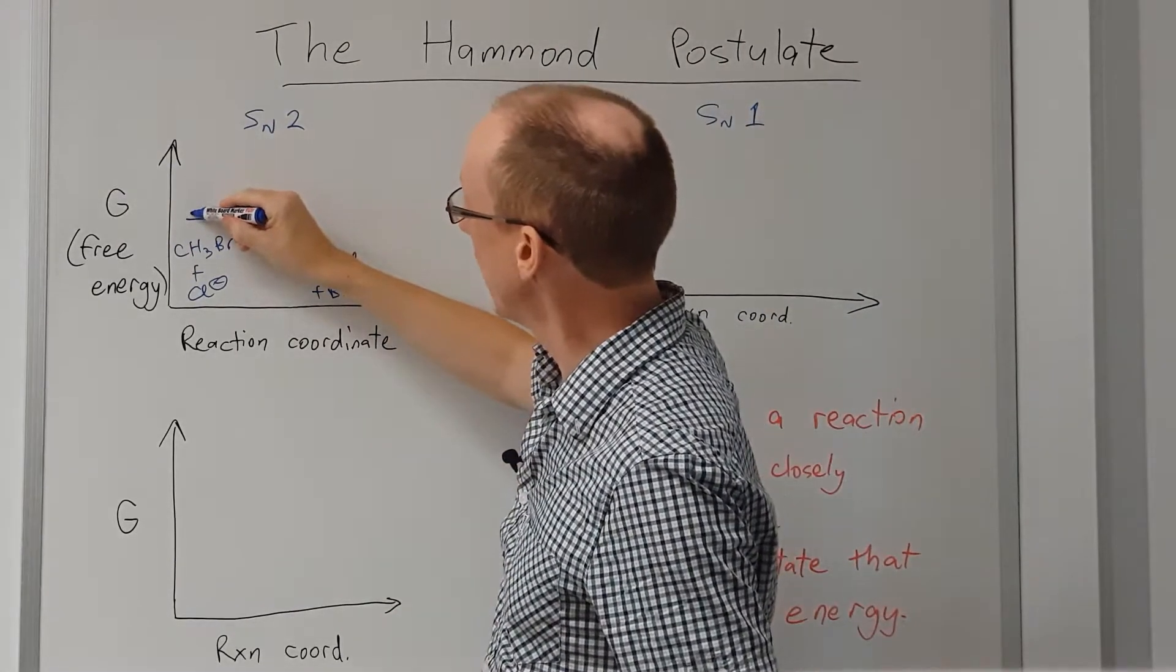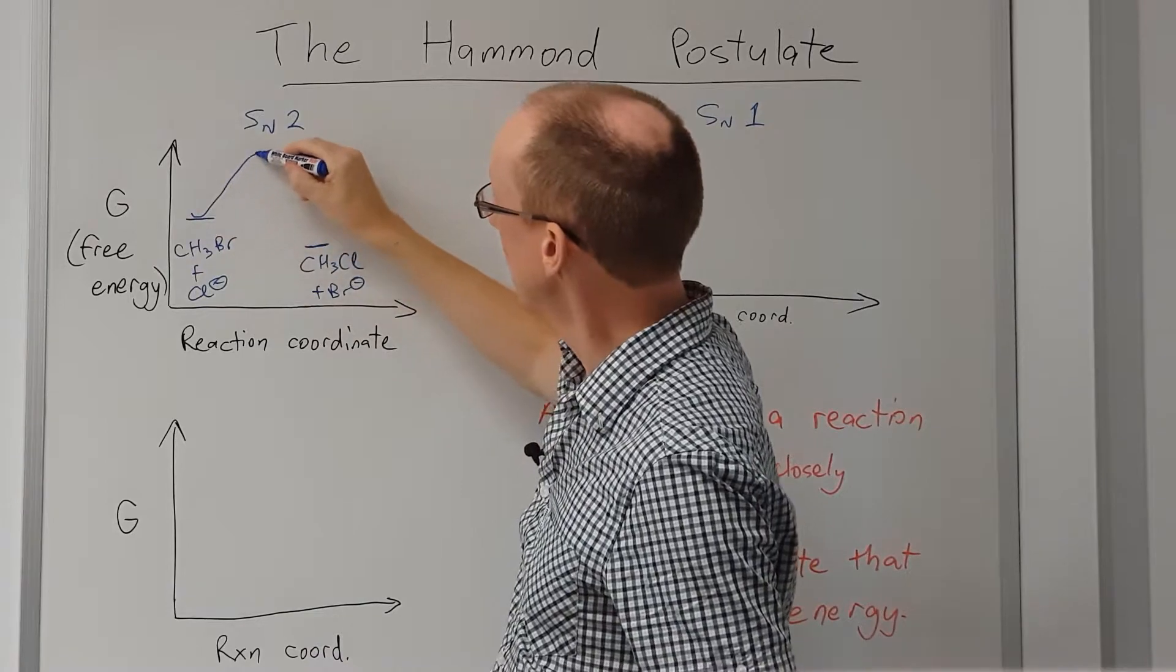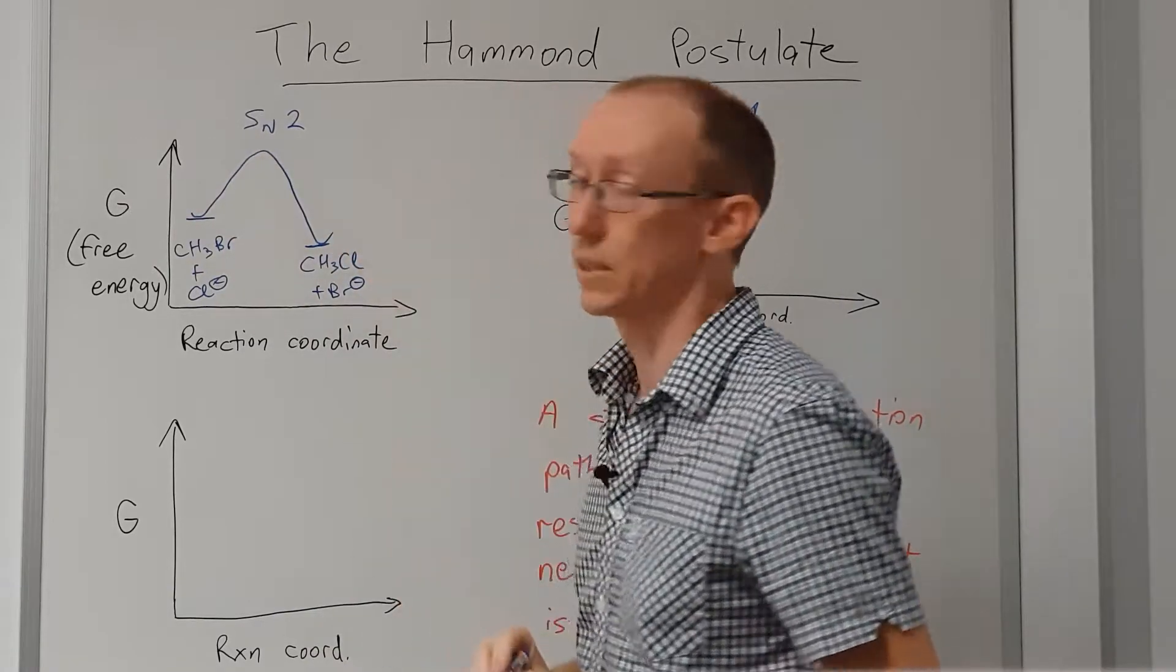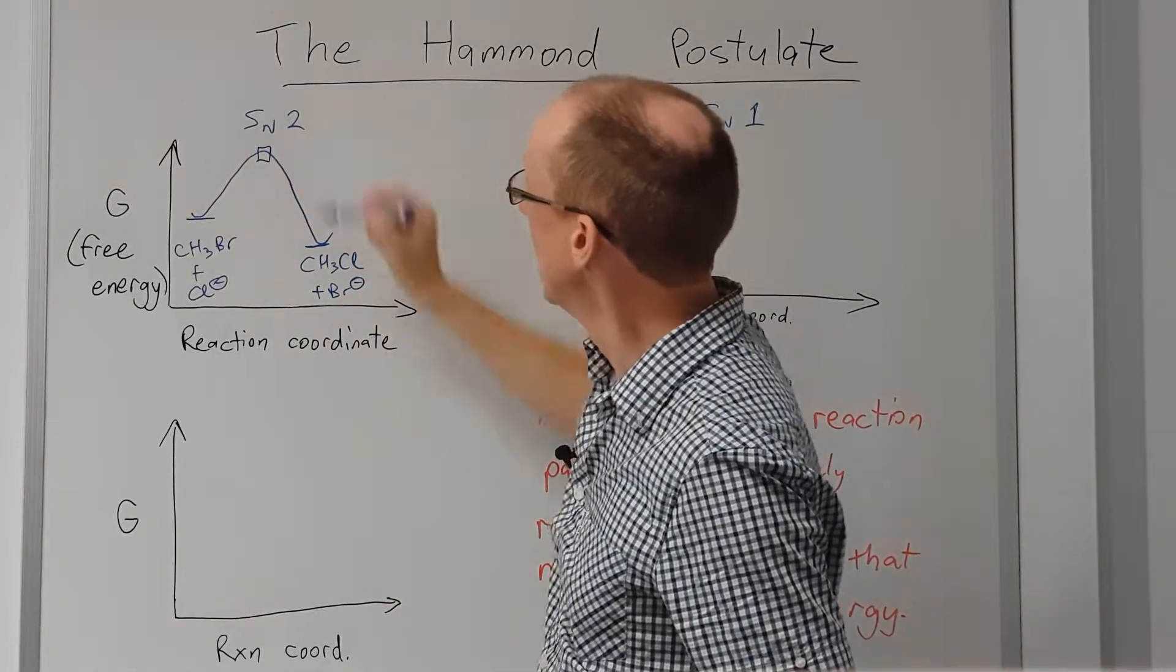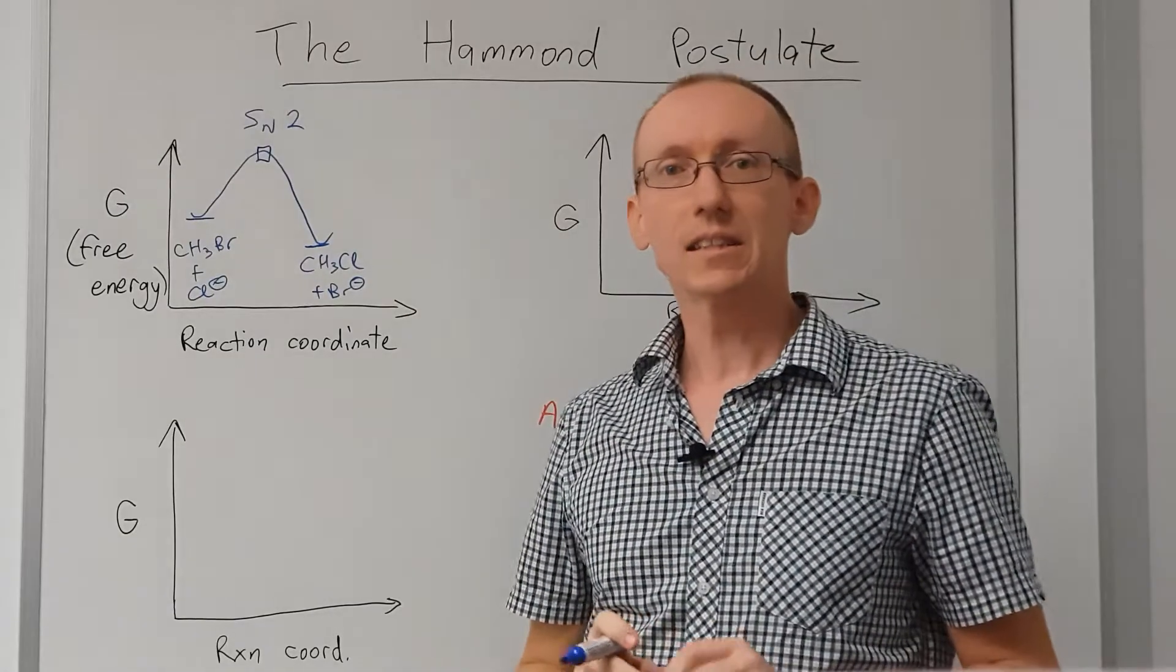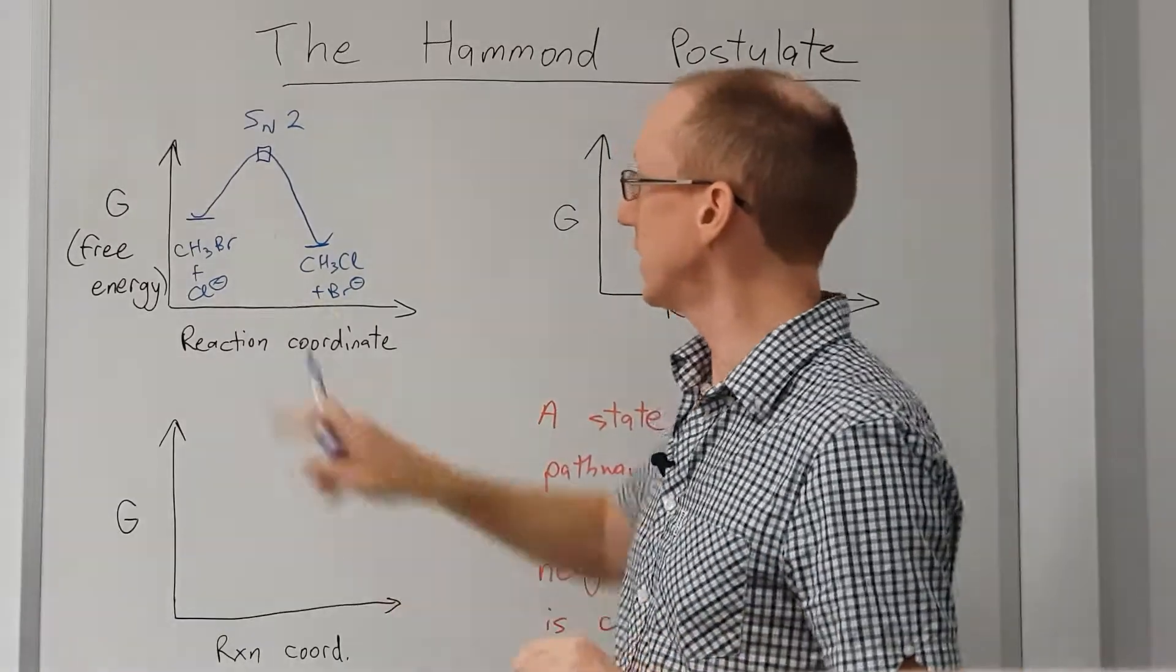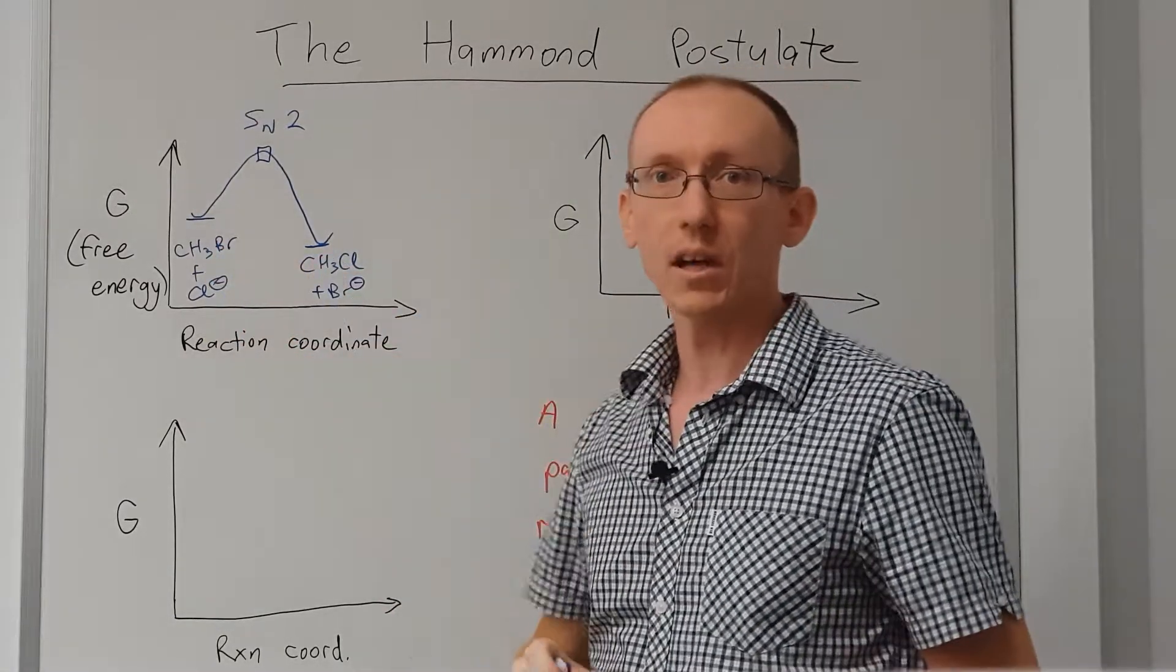This is a typical SN2 reaction. We're going to go from our starting materials up through a transition state and then down to product. This transition state here is going to be somewhere in between the starting materials and the products in structure.